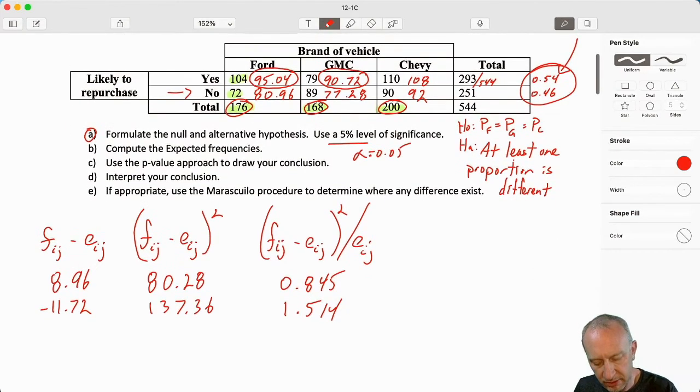Now we're on to the Chevy. So that's 110 minus, so here we are over here, minus 108. Of course, this is 2. And this is 4. Divided by that expected value, 0.037.